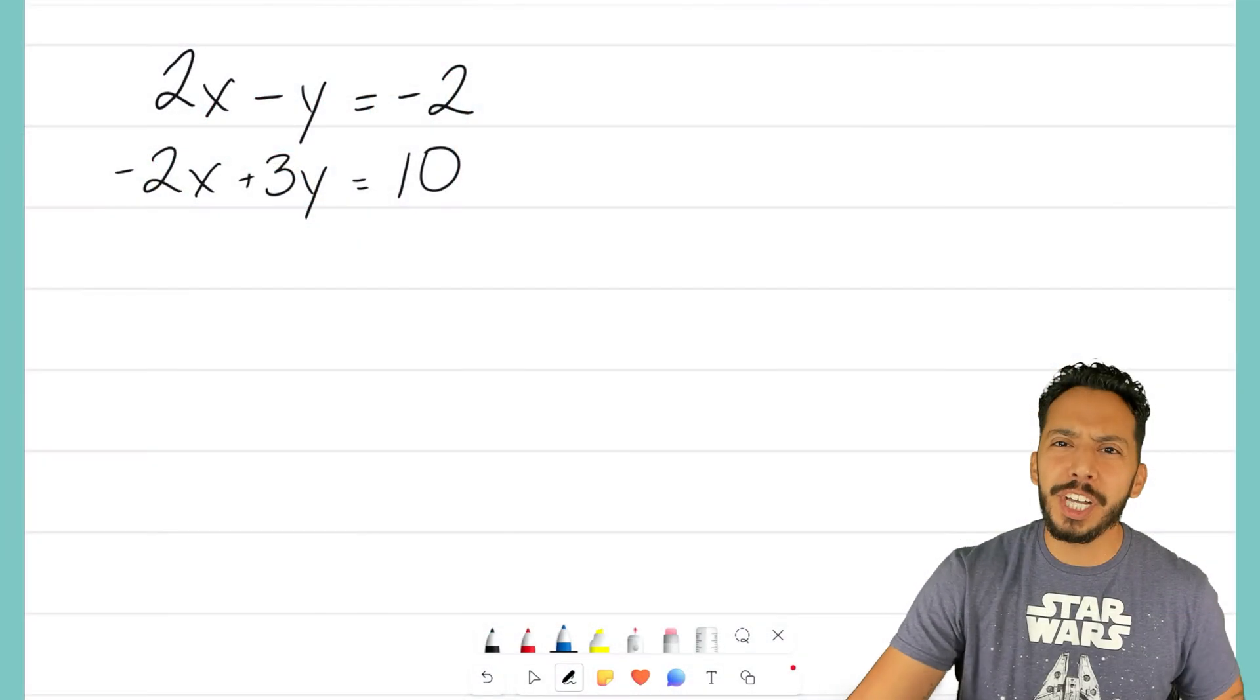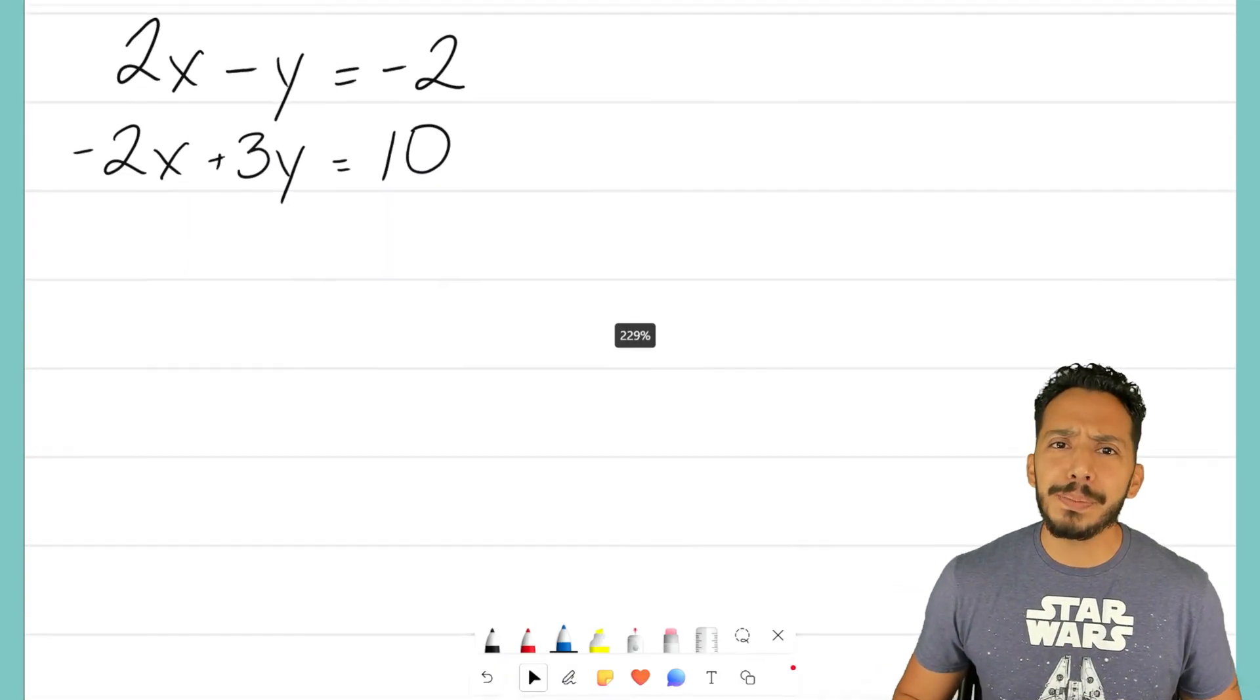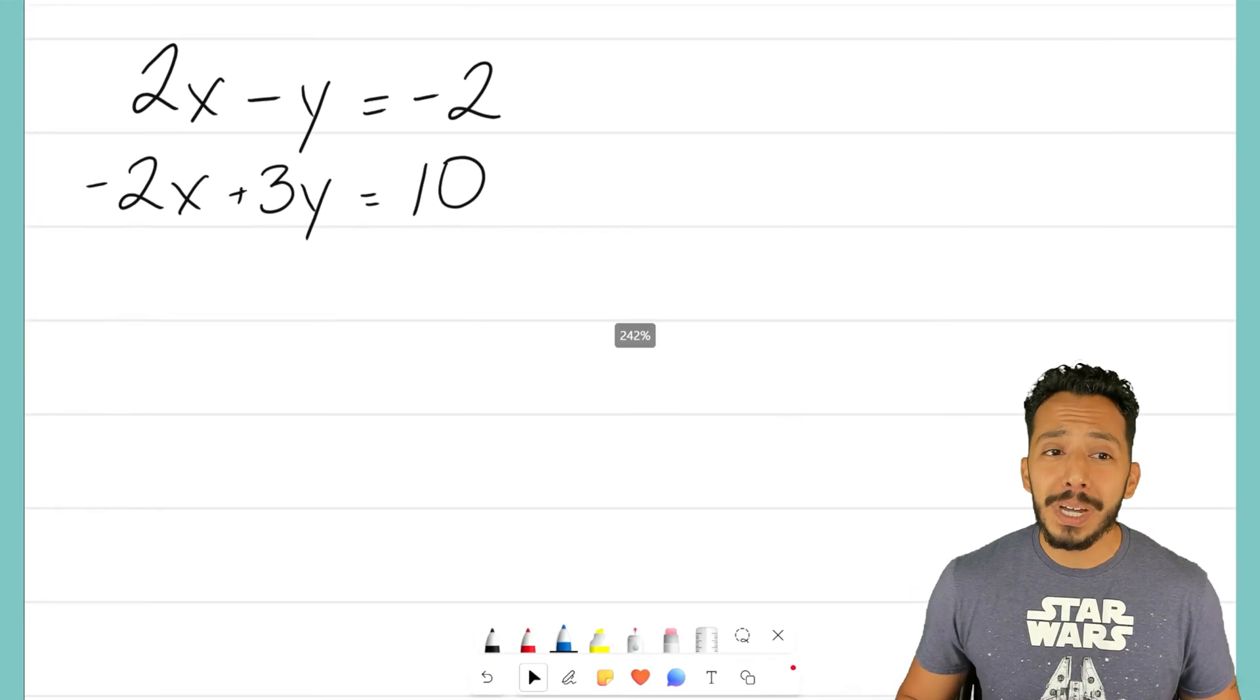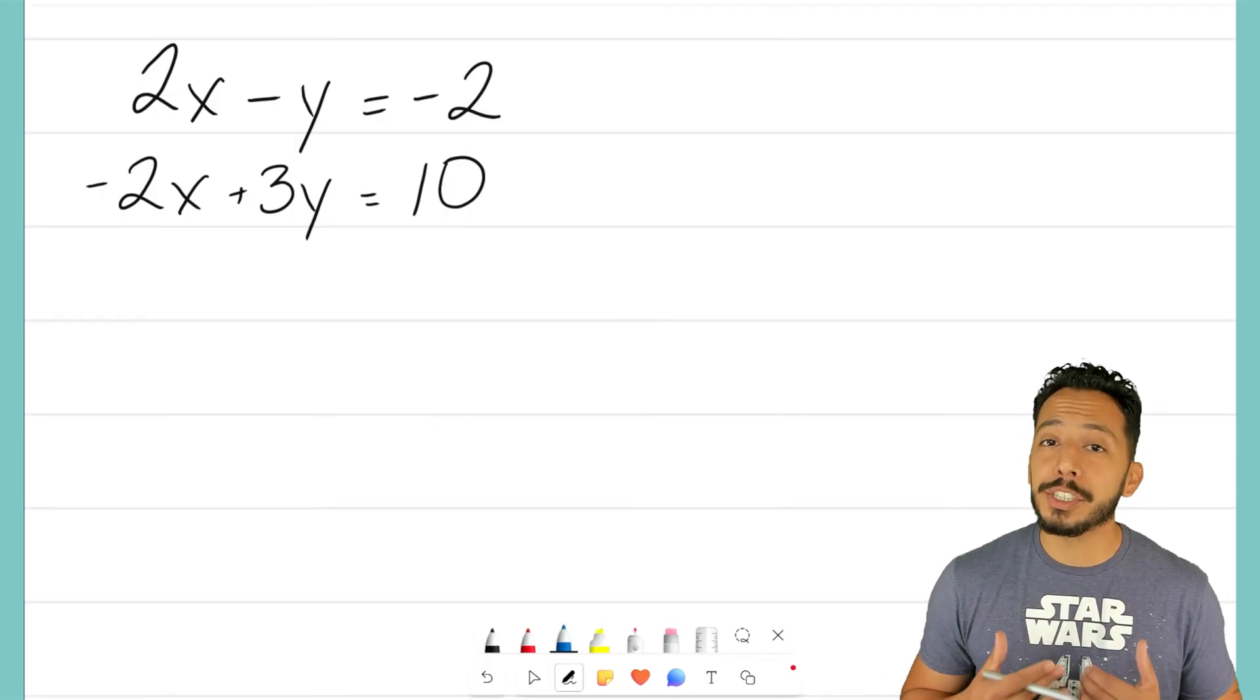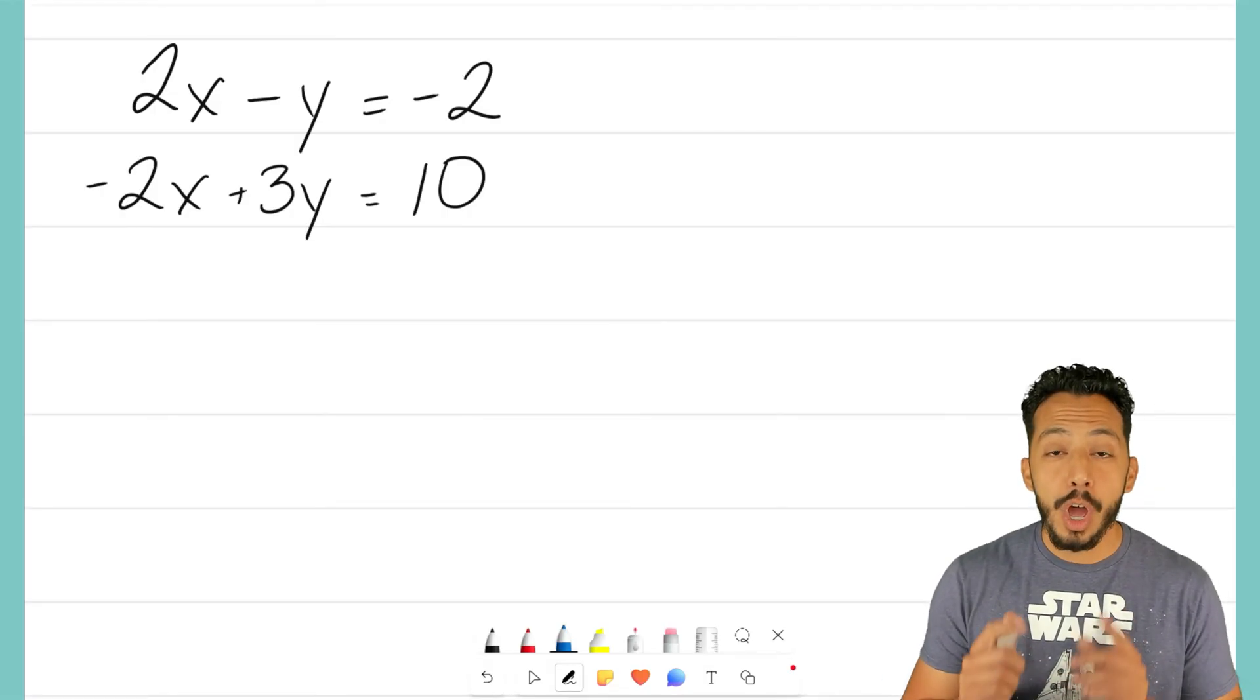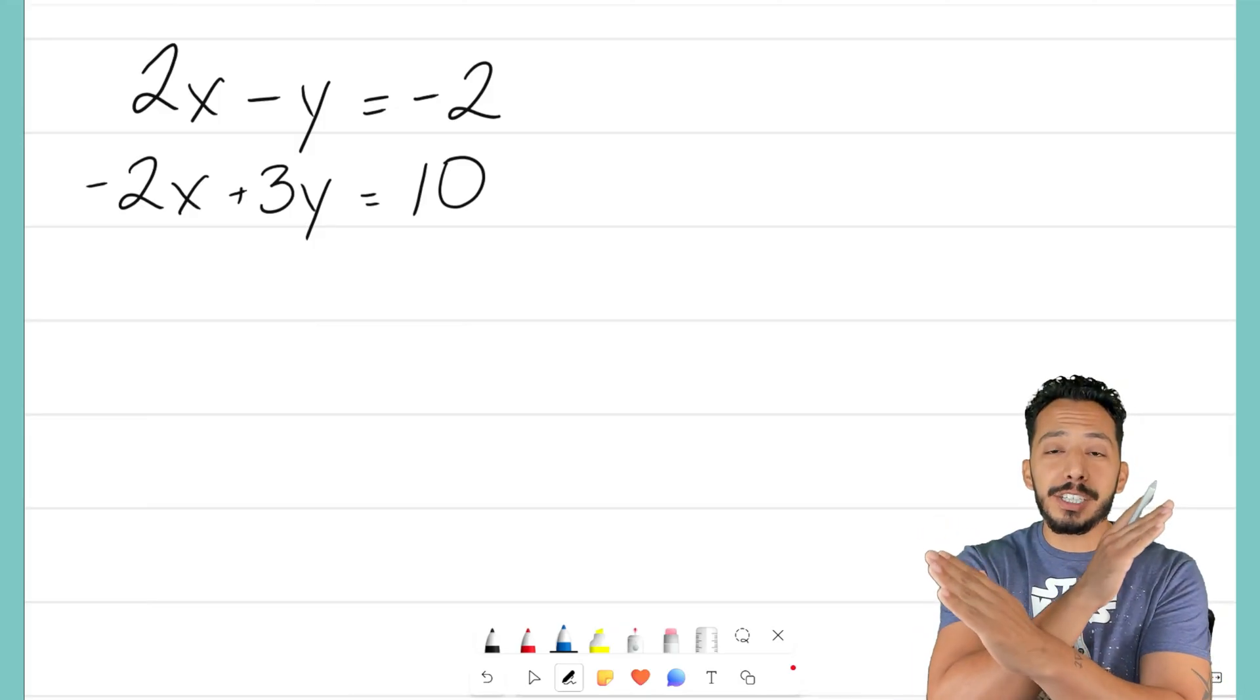Let's jump right into this equation, where I have two equations. We have 2x minus y equals negative 2, and then we have negative 2x plus 3y equals 10. And again, we're trying to find out where do those two lines intersect.